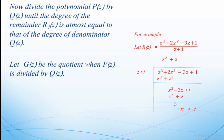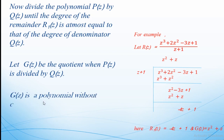Here the degree of the numerator is 3 (n = 3) and the denominator degree is 1 (m = 1). In this example, the remainder is −4z + 1 and the quotient is z² + z. The quotient is a polynomial without a constant term, and the degree of the quotient is 2, that is n − m. So in general, the quotient g(z) is a polynomial without a constant term, and the order of g(z) is n − m.